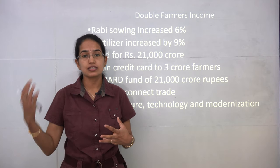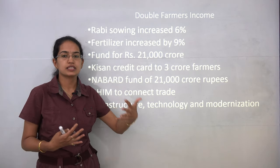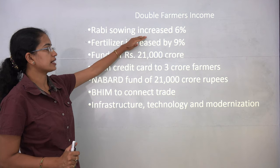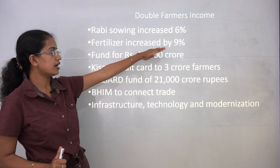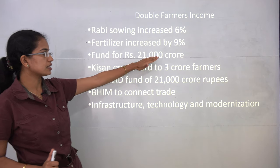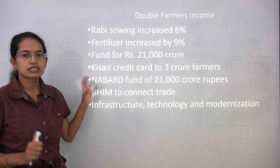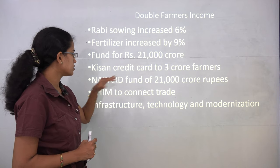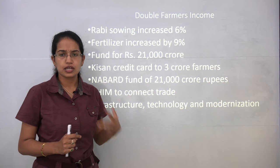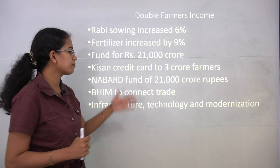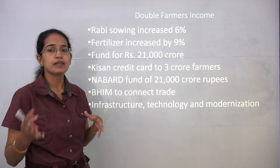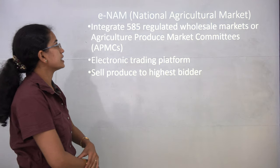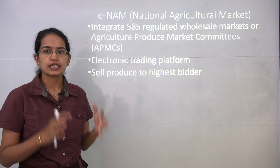Awas Yojana brings Skill India, Digital India, and Make in India under one umbrella. The next focus is doubling farmers' income — if farmers' income increases, more people will stay in rural areas. Rabi sowing has increased by 6 percent, fertilizer intake by 9 percent, and funds have been increased by 21,000 crores. Kisan credit cards have been issued under the Jan Dhan scheme.